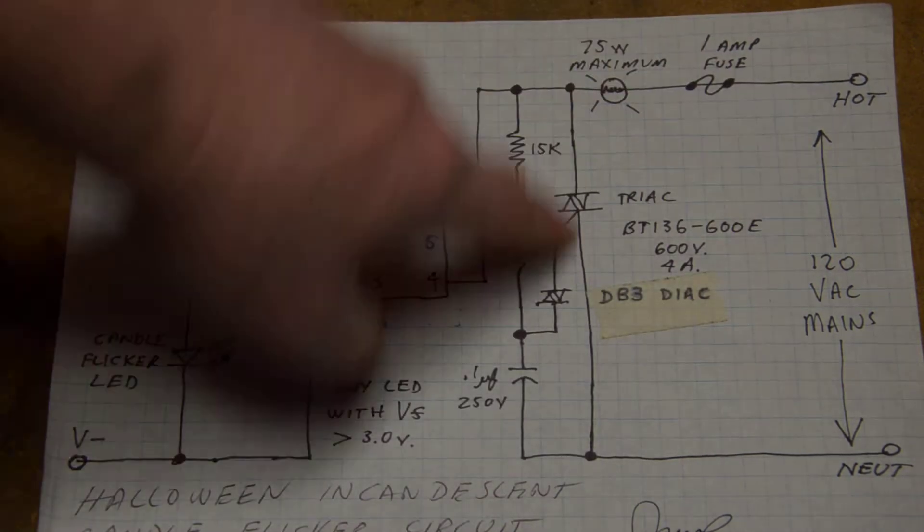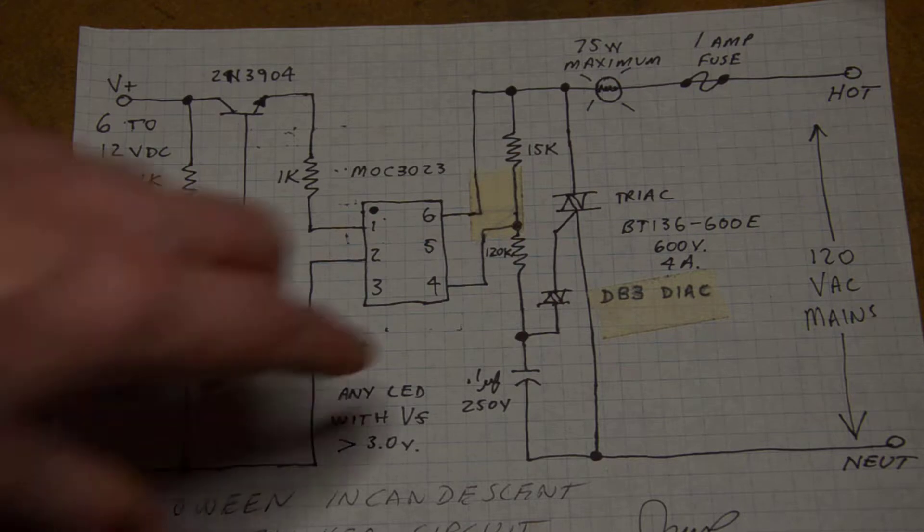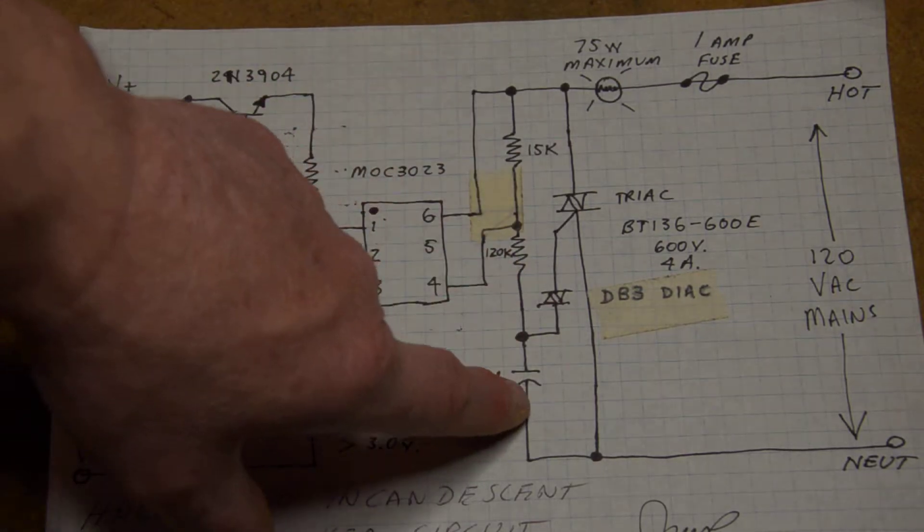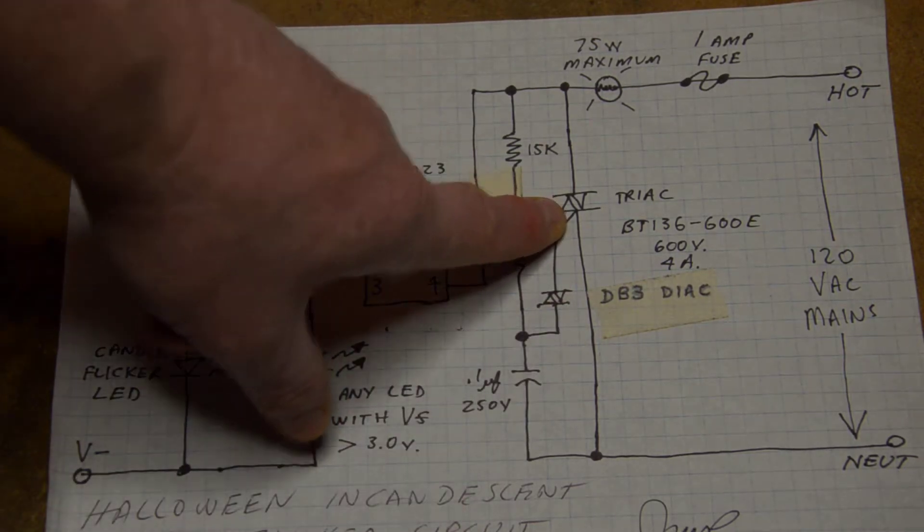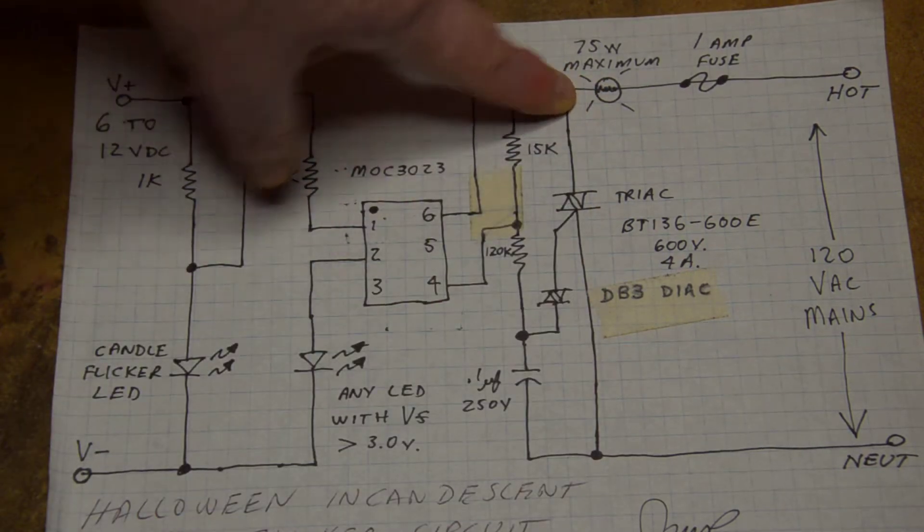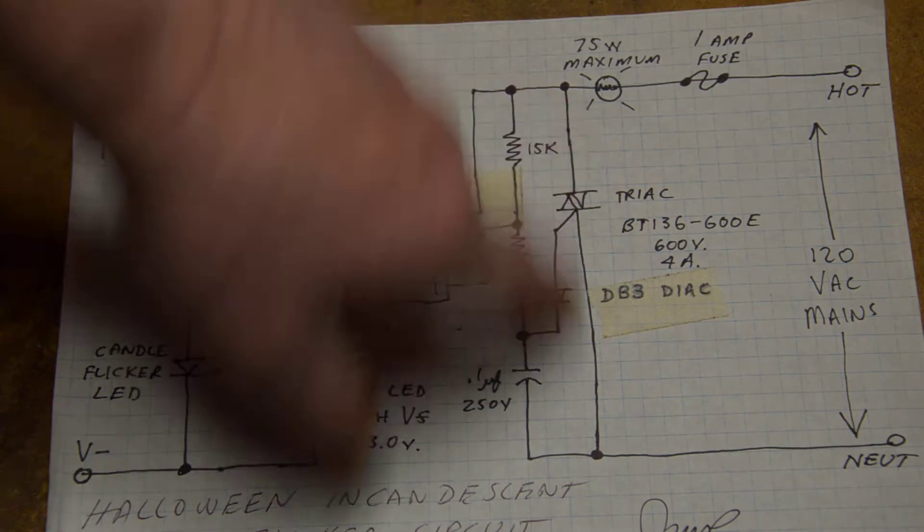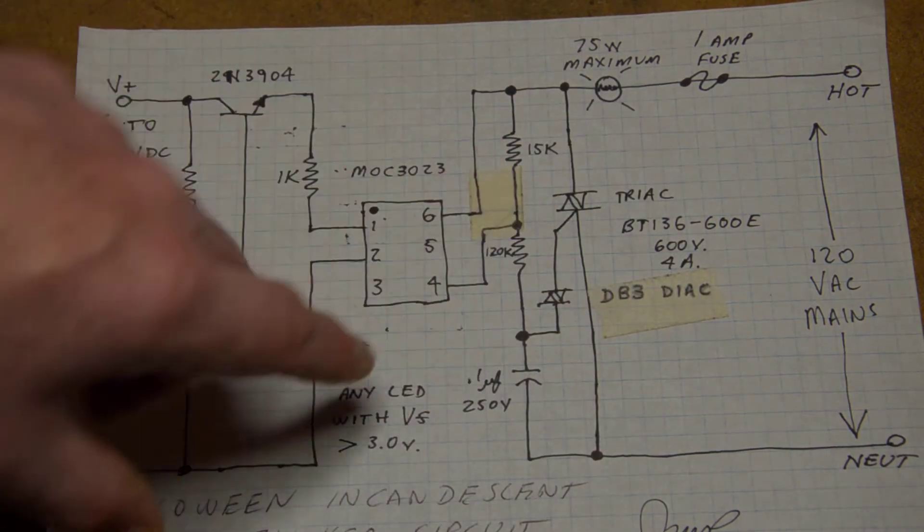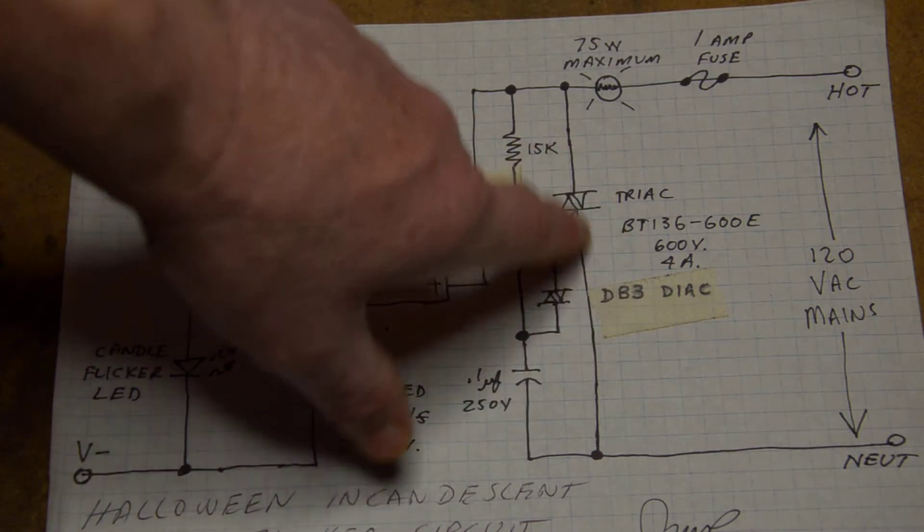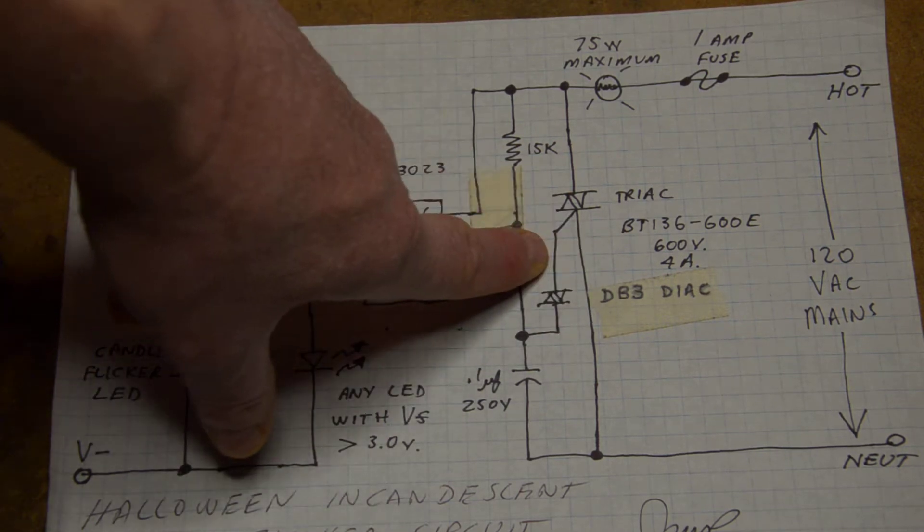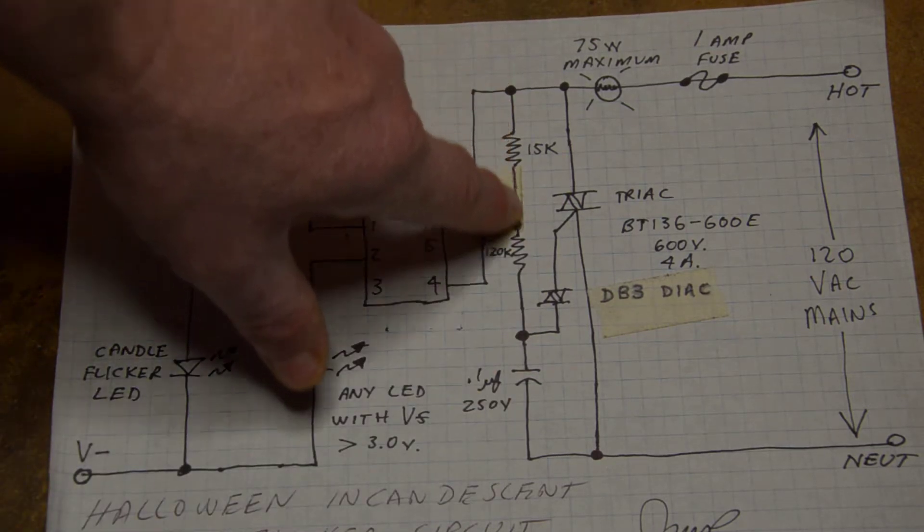This is configured like your standard dimmer control switch in your house. You got your resistor going to a capacitor that sets up a time constant that triggers your diac, which triggers your triac, which controls your load, which is a light bulb. Here I also incorporate a fuse for safety, so I got 120 volt mains coming in and it's being totally controlled by the triac. Now the internal triac of the optocoupler is controlling when, how much, how often this triac is being triggered.